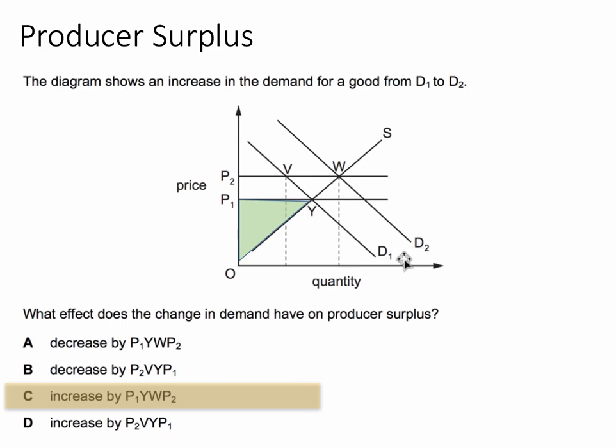Now demand shifts out from D1 to D2. The price goes up to P2 and quantity expands, so the new level of producer surplus is this yellow shaded area - the area again above the supply curve and below the price.